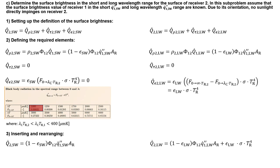This demonstration showed how an inner energy balance can be used to determine the heat flux dissipated by receiver 1, how to determine the view factor using one of the view factor charts, and how to determine the surface brightness in the short and long wavelength range for receiver 2. Thank you for your attention and see you next time.